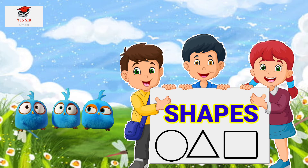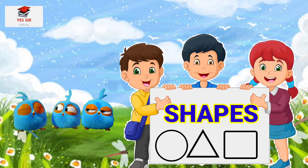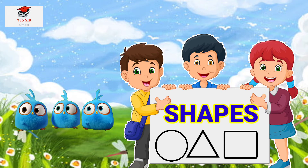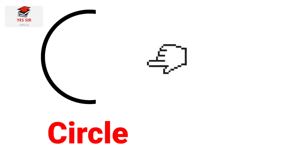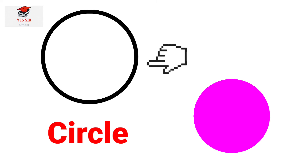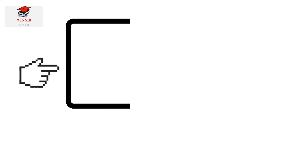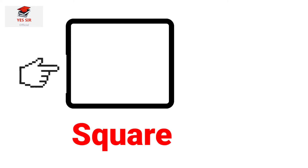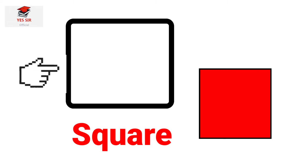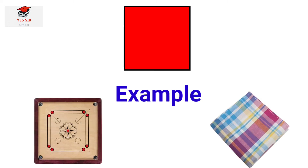Our next chapter is shapes. Let's see. What is this? This is a circle. A circle is always round. Example of a circle is sun and a wall clock. This is a square. A square has 4 sides. All the sides of a square are equal. Example: carrom board and handkerchief.